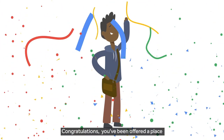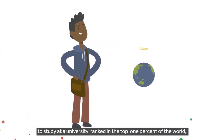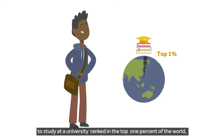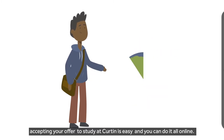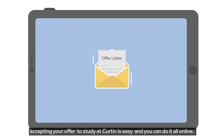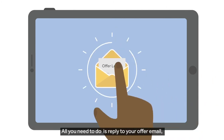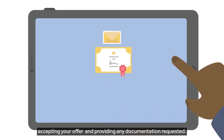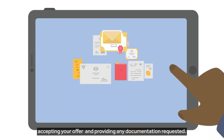Congratulations! You've been offered a place to study at a university ranked in the top 1% of the world. Accepting your offer to study at Curtin is easy, and you can do it all online. All you need to do is reply to your offer email accepting your offer and providing any documentation requested.